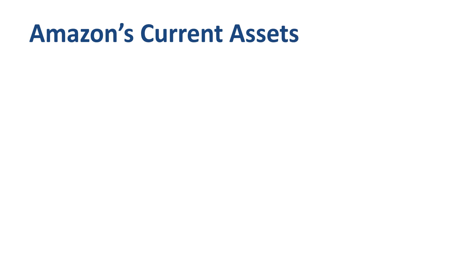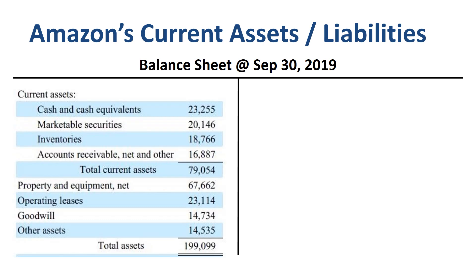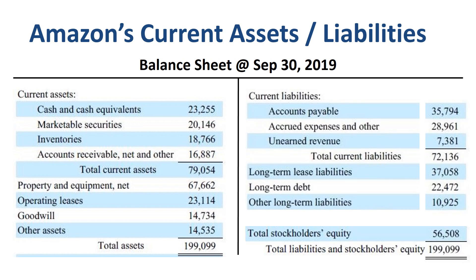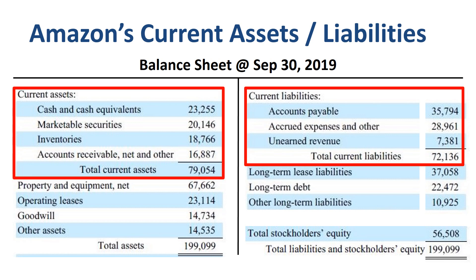To understand current assets and current liabilities in real life, let's look at the balance sheet of Amazon of September 2019. Assets on the left, totaling $199 billion. Liabilities and equity on the right, also totaling $199 billion. Current assets of $79 billion, and current liabilities of $72 billion.